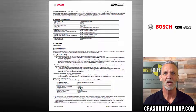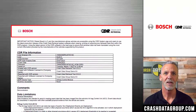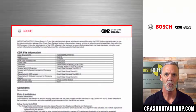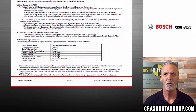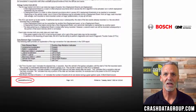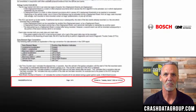Every page of a Bosch CDR report contains a header and a footer. The header contains the Bosch logo and the trademark CDR logo. CDR reports cannot be private labeled as they are derived from the Bosch CDR software. The footer contains the entered vehicle identification number, page information, and date and time information of the viewing of a report or when it was saved as a PDF document.